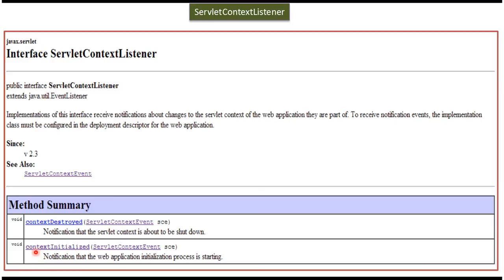When we start the server, the context will be created, so the contextInitialized method will be called. When we shut down the server, the context will be destroyed, and the contextDestroyed method will be called. We can define the listener in the web.xml file.